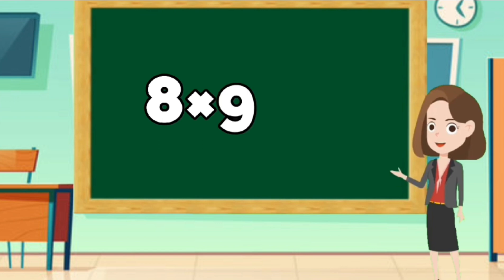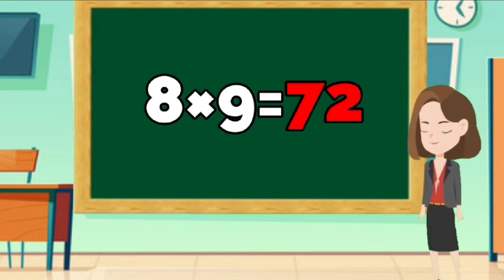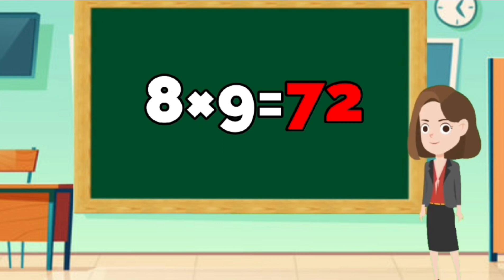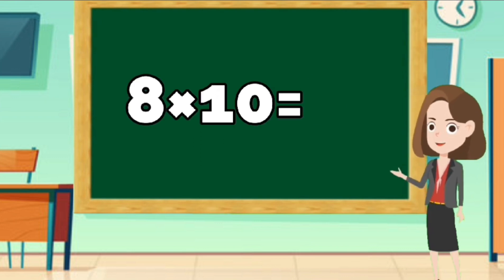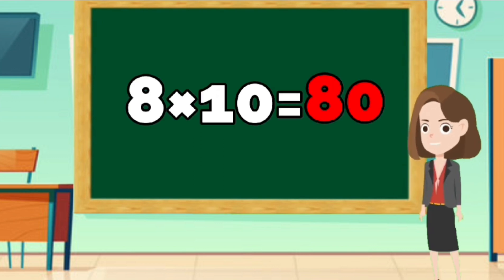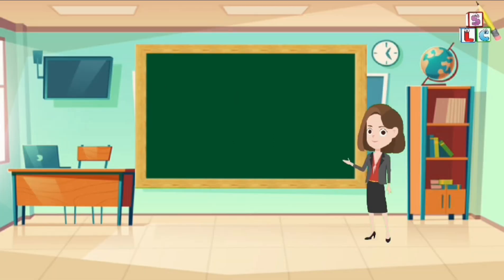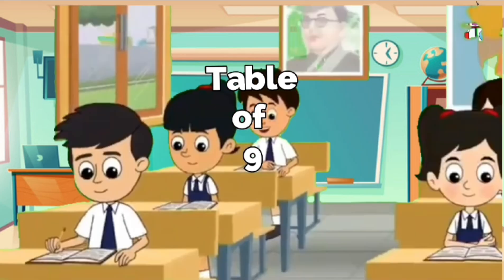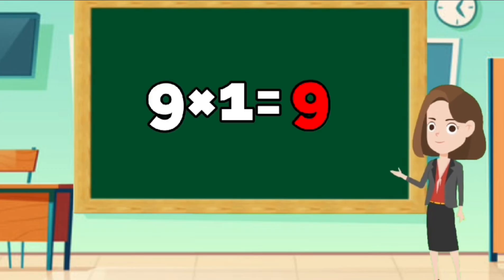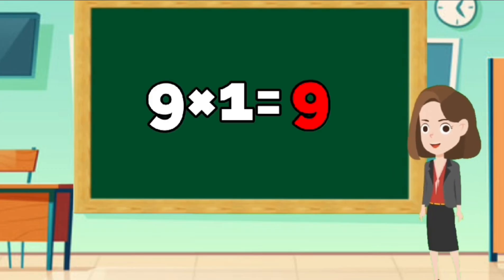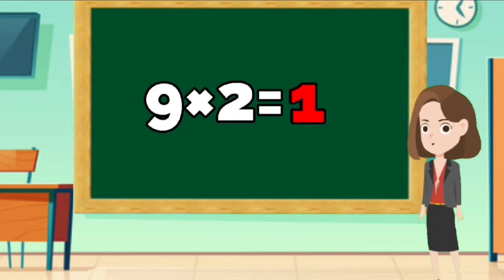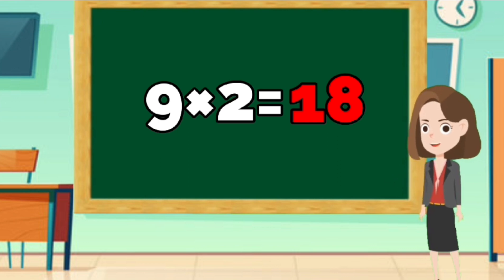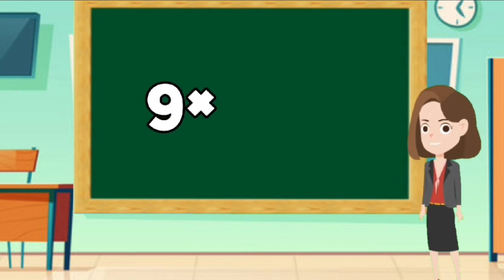8 times 9 is 72. 8 times 10 is 80. Let's learn Table of Nine. 9 times 1 is 9. 9 times 2 is 18. 9 times 3 is 27.